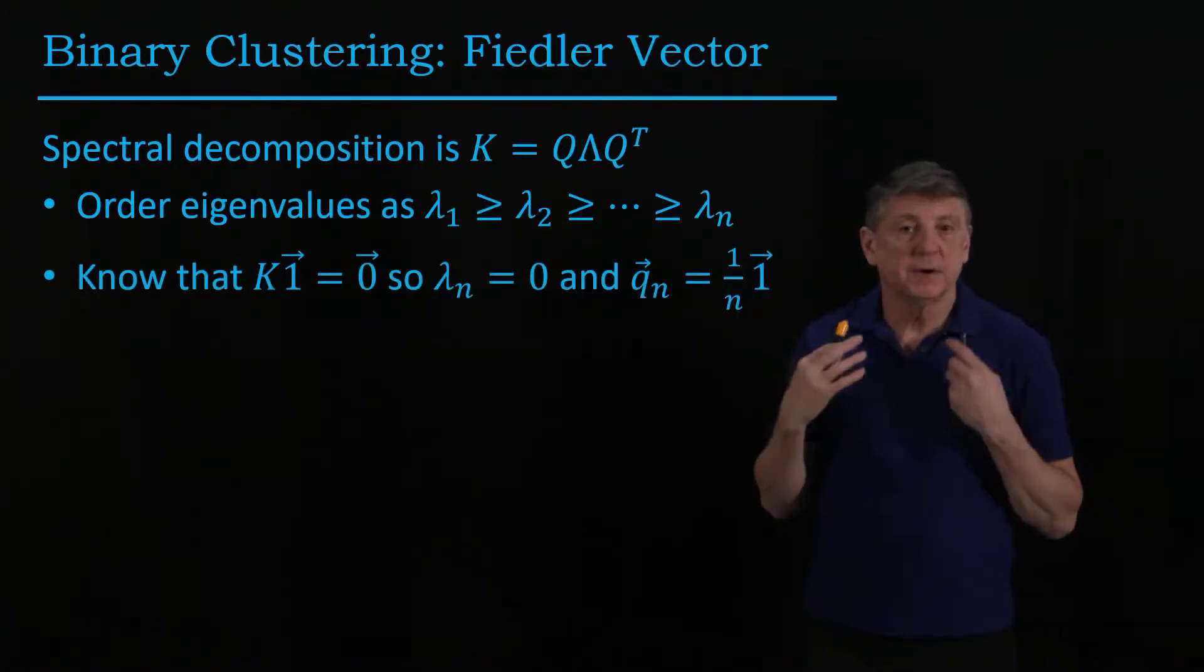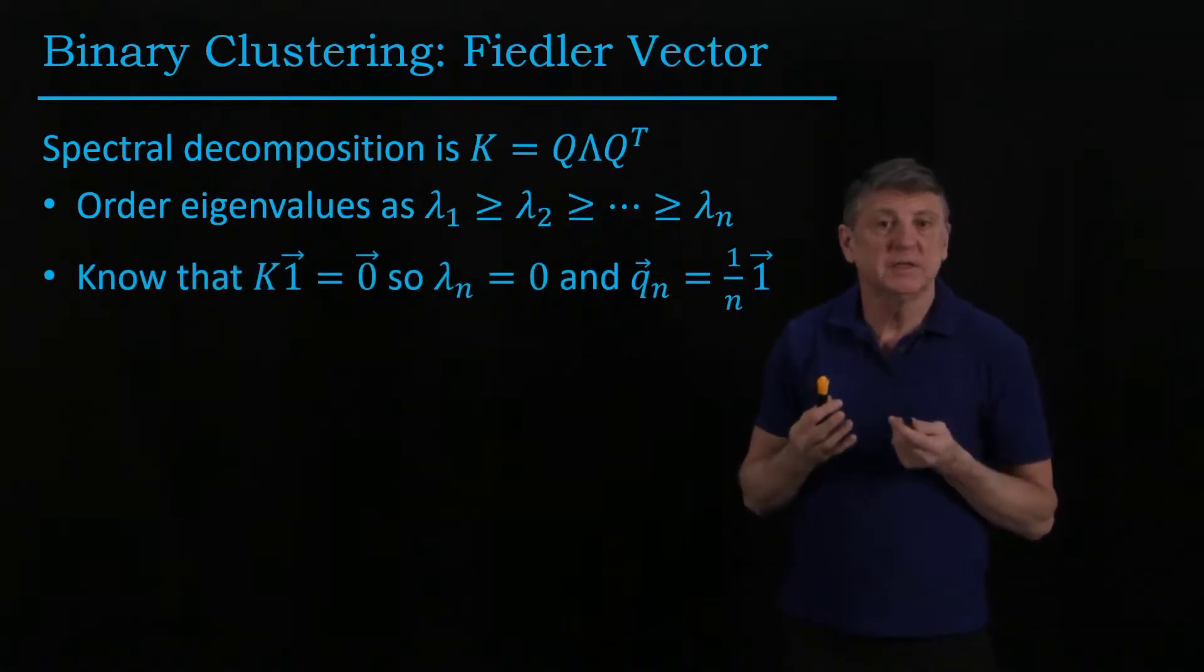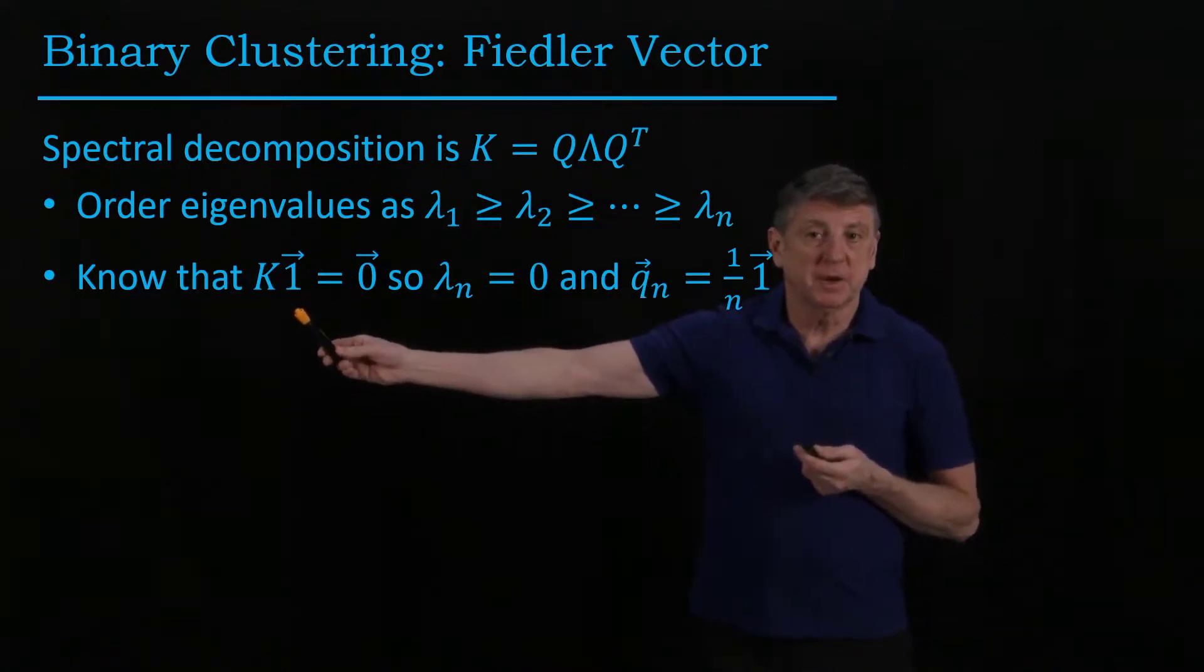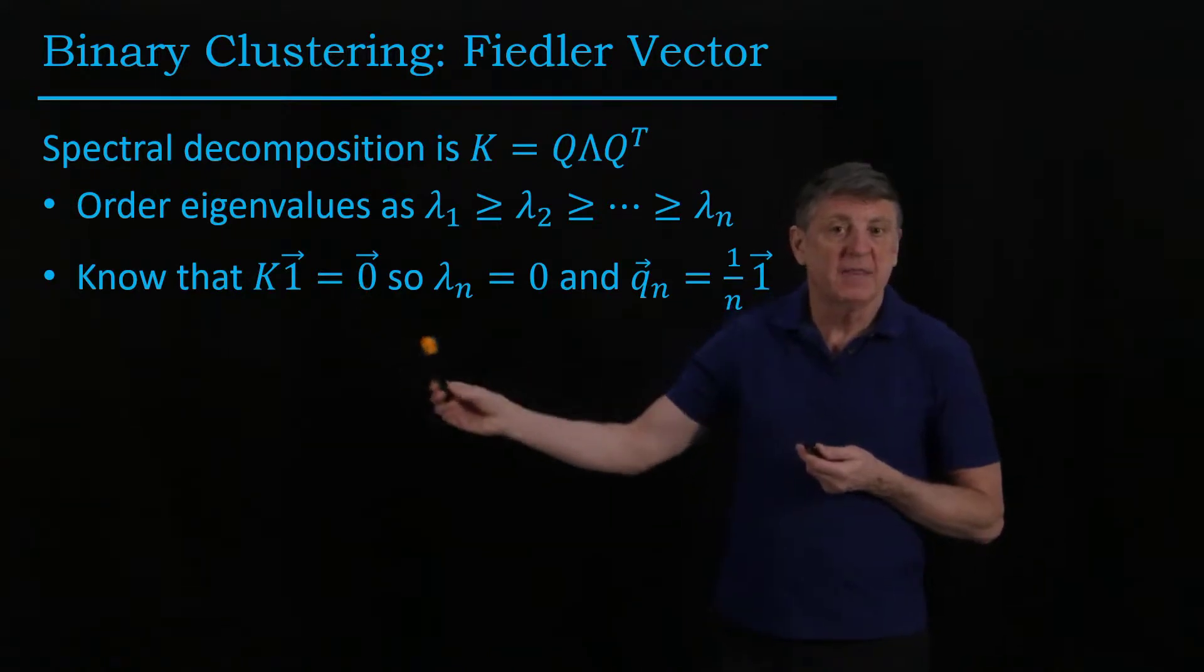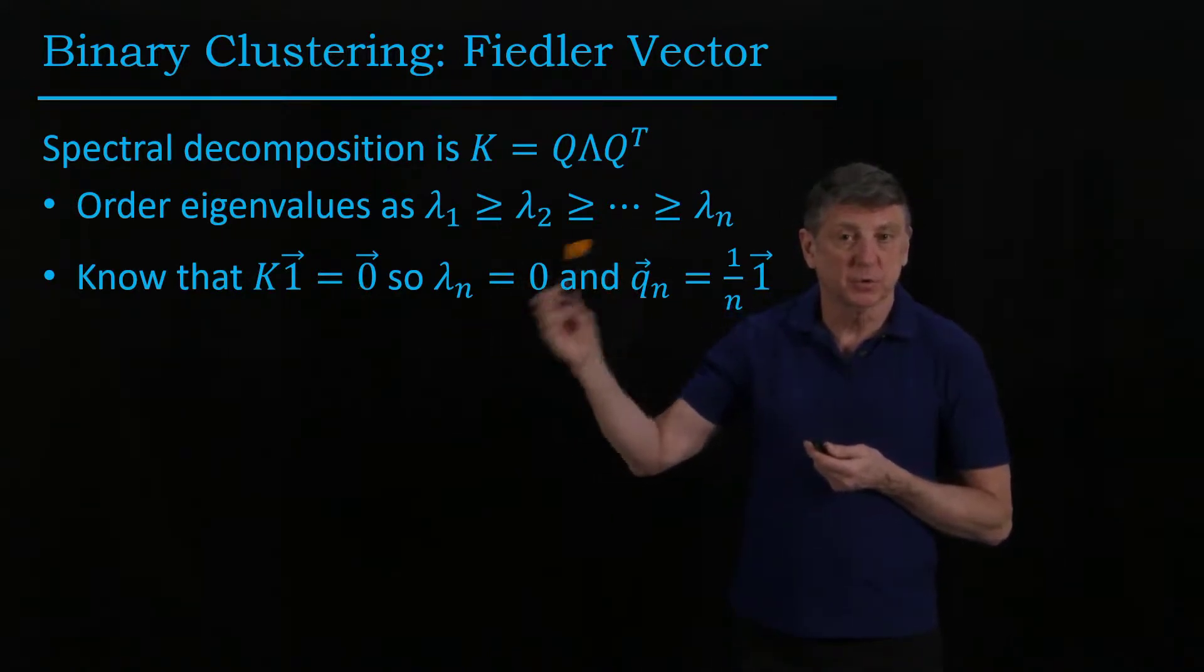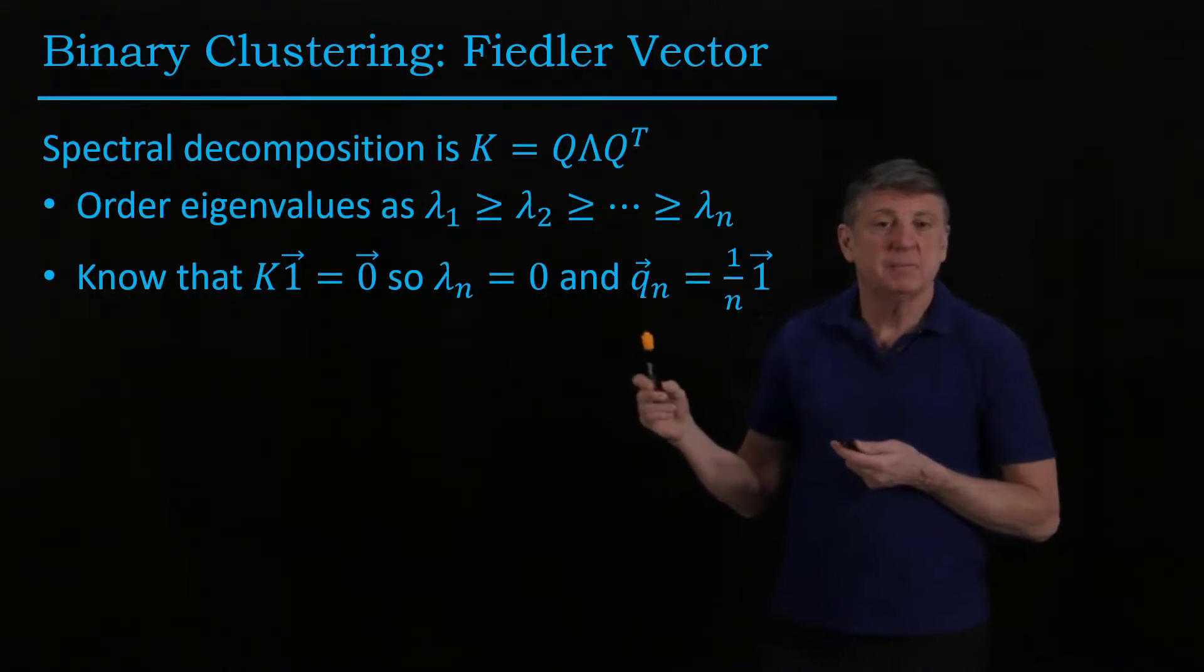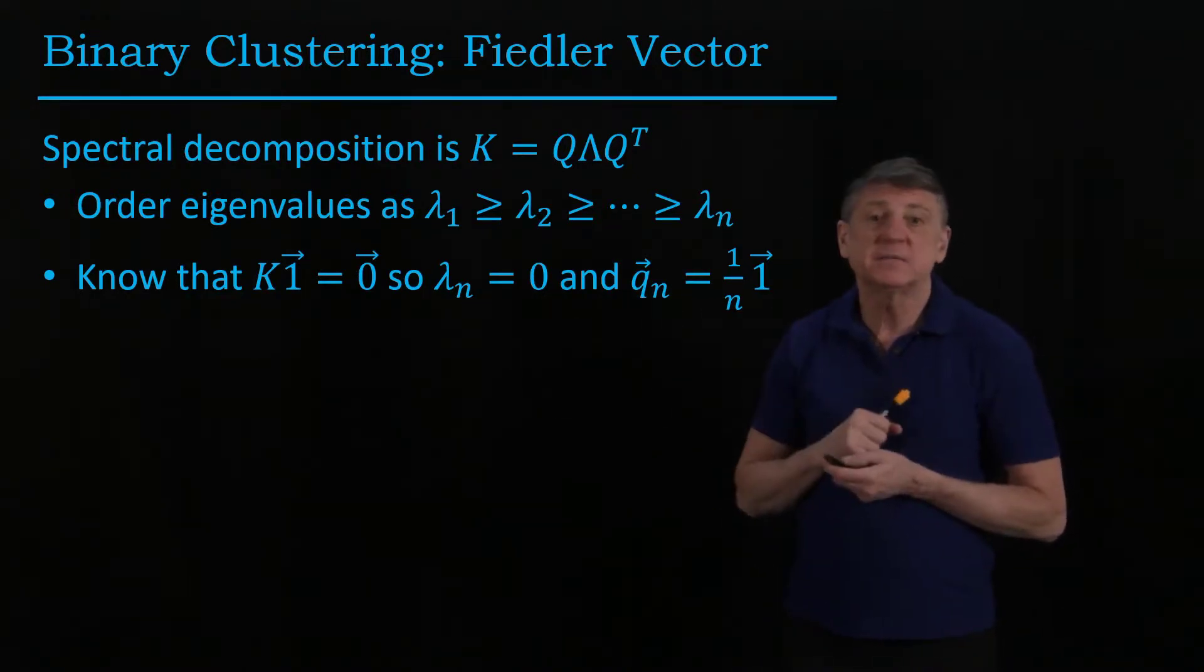And we know that, by the way that we've constructed the Laplacian matrix, we know that if we multiply it by the ones vector, we get the zero vector. And that means that, because of this ordering, that the smallest eigenvalue is zero, and that means that this equation is very slightly wrong.